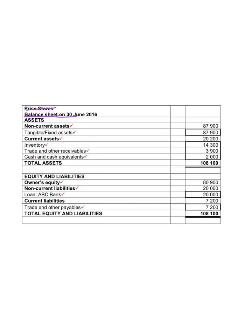The balance sheet is divided into two sections. The top part is the assets; the bottom part is equity and liabilities. At the beginning of the year we learned that assets equals owner's equity plus liabilities. So the assets are at the top and equity and liabilities are at the bottom — the top part must equal the owner's equity plus liabilities, because this is the accounting equation.